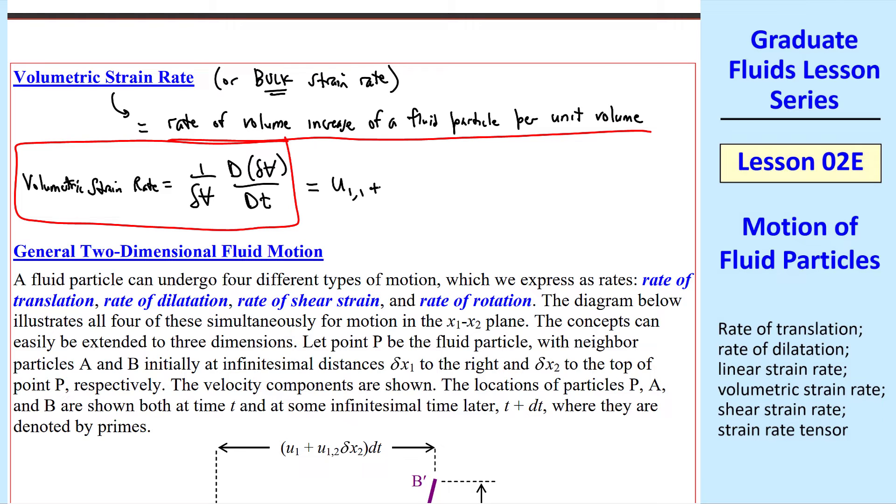It turns out that volumetric strain rate is u1 comma 1 plus u2 comma 2 plus u3 comma 3, or ui comma i in tensor notation, where the i's are summed, as you can see here.